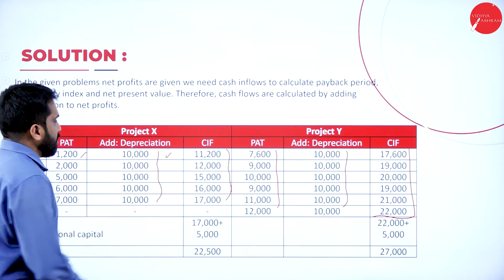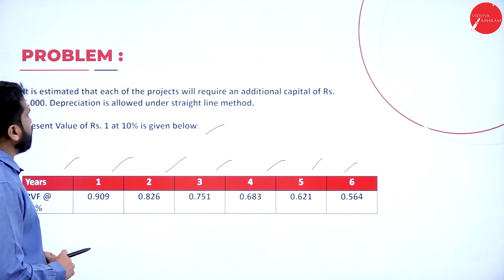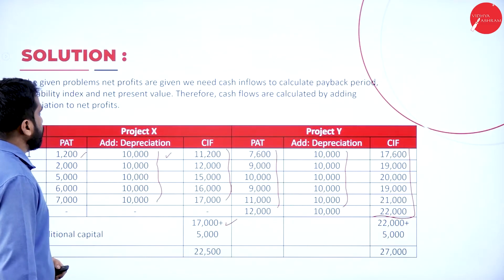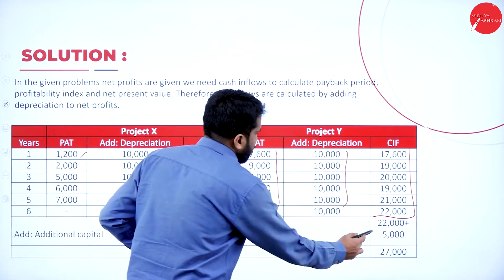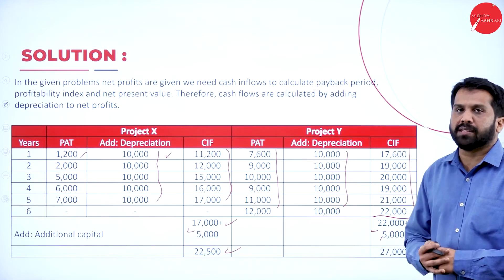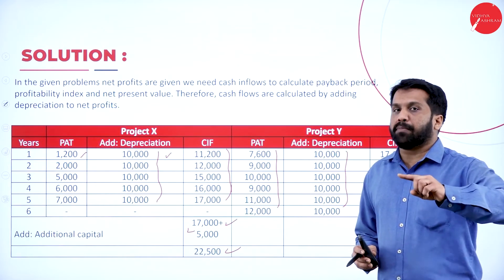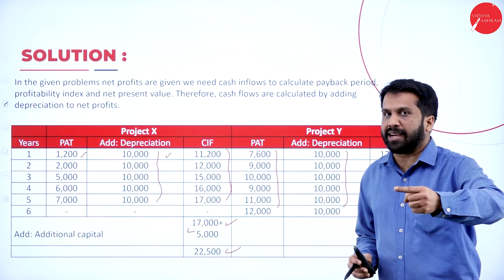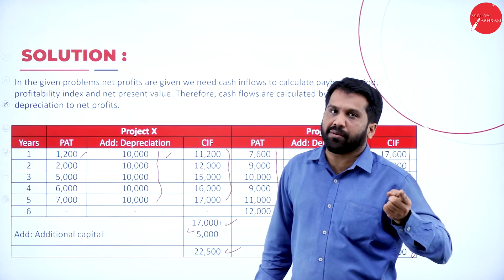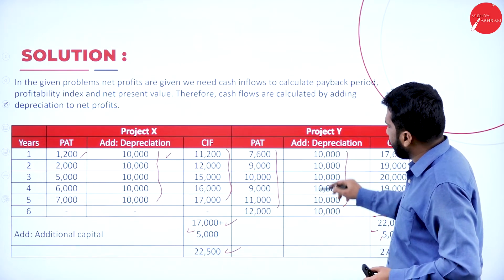Once you are done with this, the total for X is 17,000 — and in the question they mentioned 5,000 additional capital. So 17,000 plus 5,000 gives 22,500. And 22,000 plus 5,000 gives 27,000 for Y. Simple calculation: they have given profit after depreciation and after tax. After depreciation means it is already deducted — we have to add it back. So we just added depreciation. Clear? For project X, original cost 50,000 plus additional 5,000 gives total investment of 55,000. For project Y, 60,000 plus 5,000 gives 65,000.